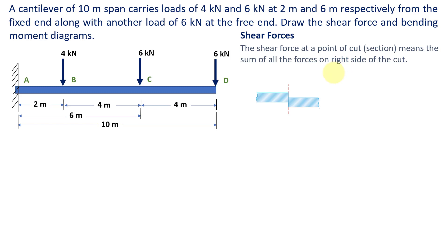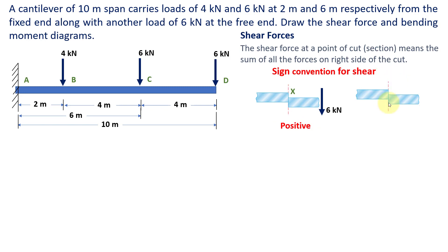Let us see the sign convention. If the resultant force on the right side of the cut is moving in the downward direction, we consider this as positive. If the right side resultant force is in the upward direction, it is considered negative. As far as the given example is concerned, we have all loads directed downward, so all the shear forces acting in this cantilever beam are positive, because when we make a cut and look at the right side, the force is directed downward.